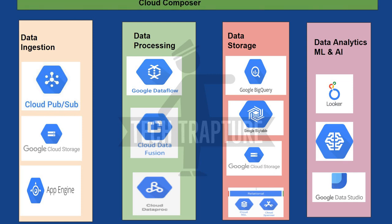To orchestrate all these services together, we use Cloud Composer. For example, once a file is available in the storage bucket, data processing starts, and once that is completed, a report is created. All these task dependencies are orchestrated using Cloud Composer. This completes the full flow: data ingestion, data processing, data storage, and analytics. In the next few videos, I'll explain all these services in detail with hands-on demos, so stay tuned.